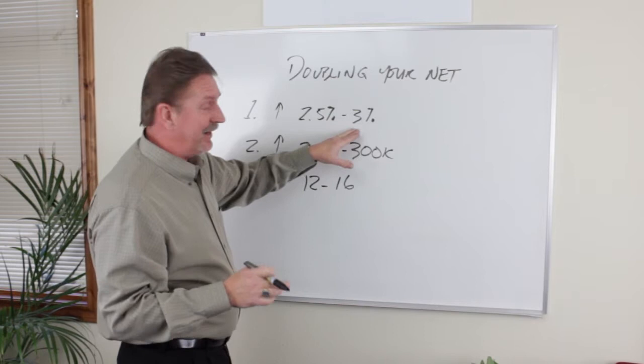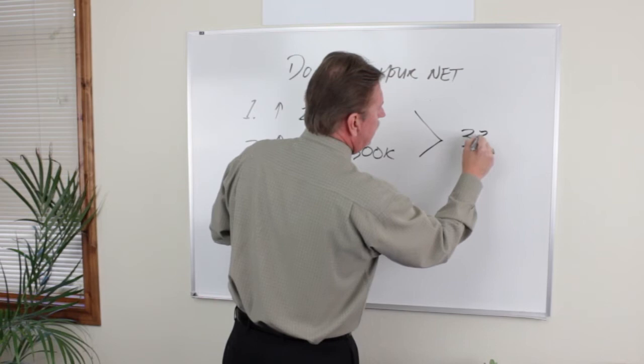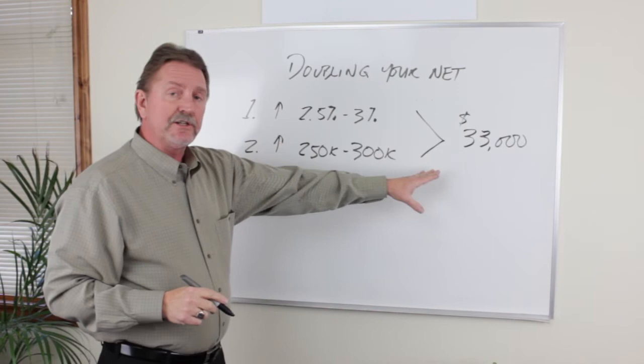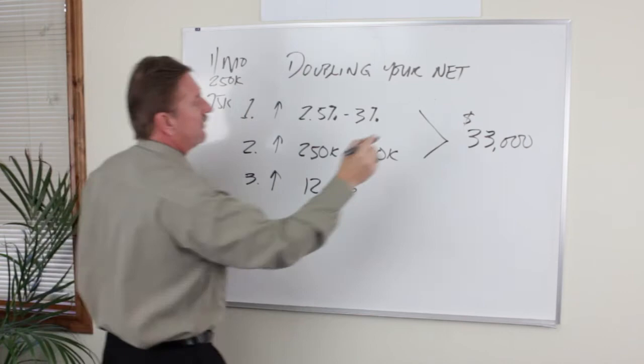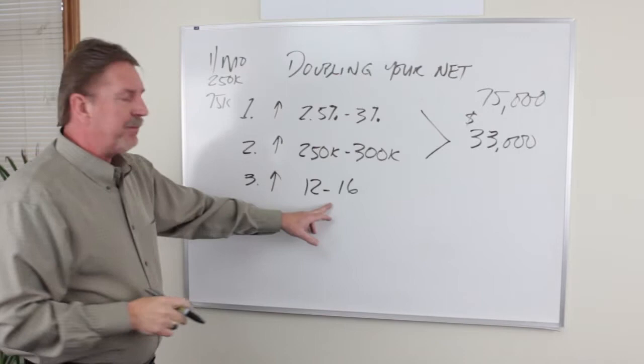If you're able to just increase your commission to 3%, which is what you should be getting, and you're able to increase your average sales price, those two items will bring you $33,000 in additional income. If you're doing one deal a month and your average sales price is $250,000, that would mean your current income is $75,000. So we put that over here.